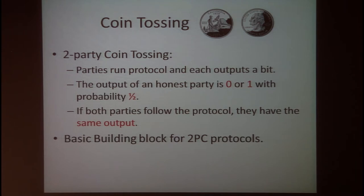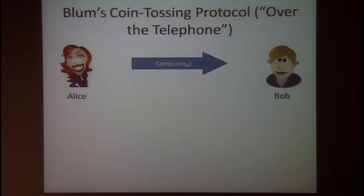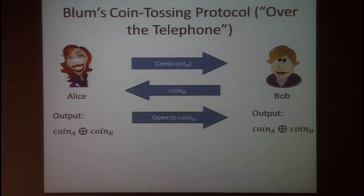Let's look at a classic example called Blum's coin tossing over the telephone. Alice sends a commitment to her coin A, then Bob sends his coin back to Alice, and in the last message Alice opens her commitment to reveal coin A. The output of both parties is the XOR of coin A and coin B.